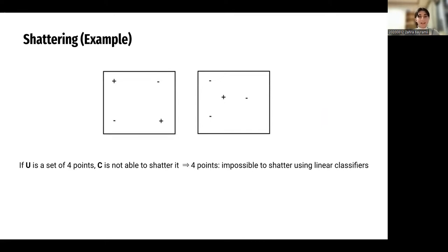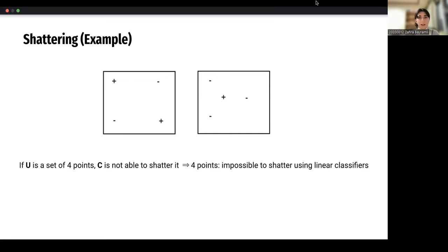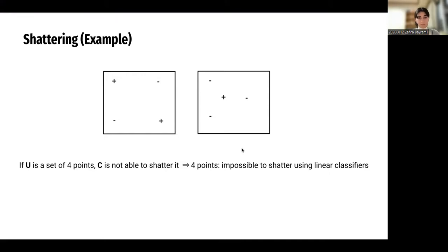What about a case where we cannot shatter? We can look at a set of four points where C is not able to shatter them. As you can see from the picture, there does not exist a straight line that separates those points into two parts where one has only negative points and the other only positive. So it's impossible to shatter these four points using linear classifiers.